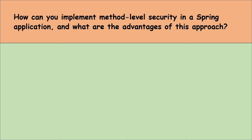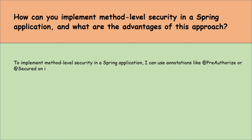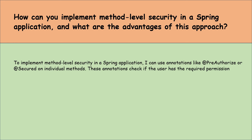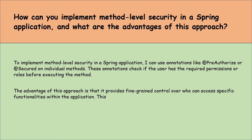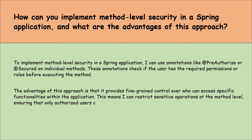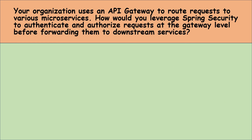How can you implement method-level security in a Spring application, and what are the advantages of this approach? To implement method-level security in a Spring Boot application, I can use annotations like @PreAuthorize or @Secured on individual methods. These annotations check if the user has the required permissions or roles before executing the method. The advantage is fine-grained control over who can access specific functionalities within the application, restricting sensitive operations at the method level so only authorized users can perform certain actions.